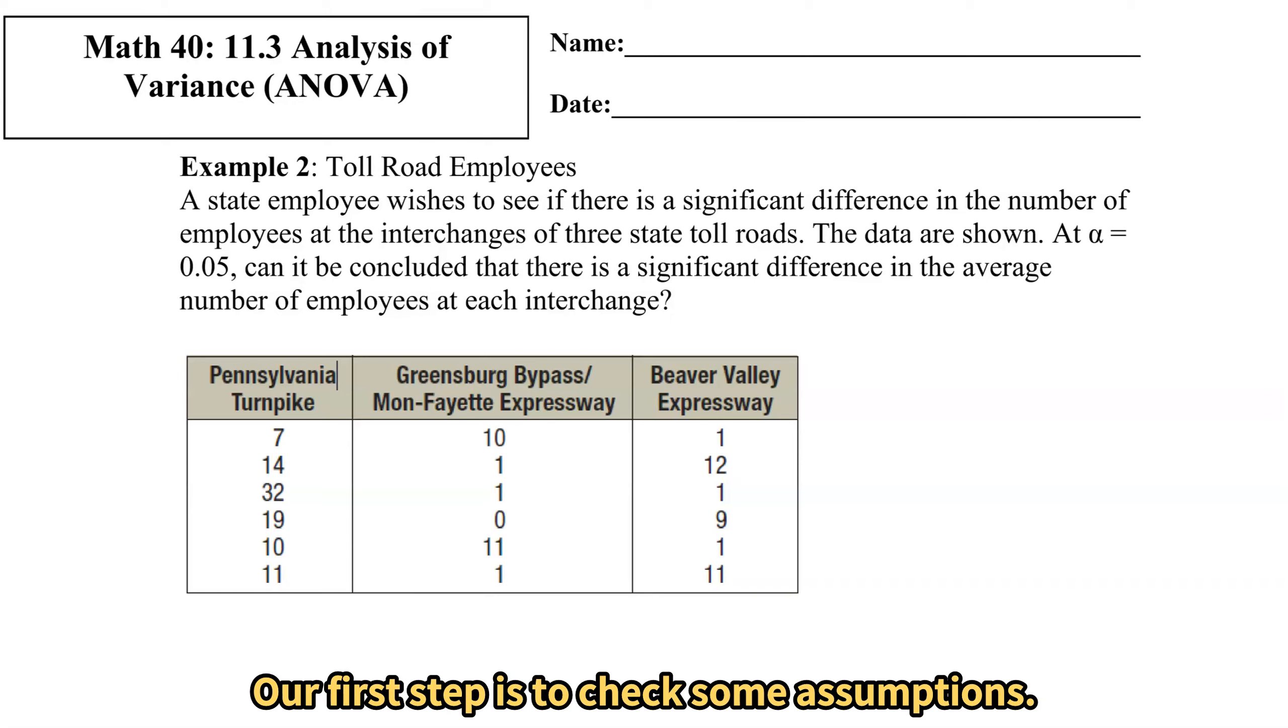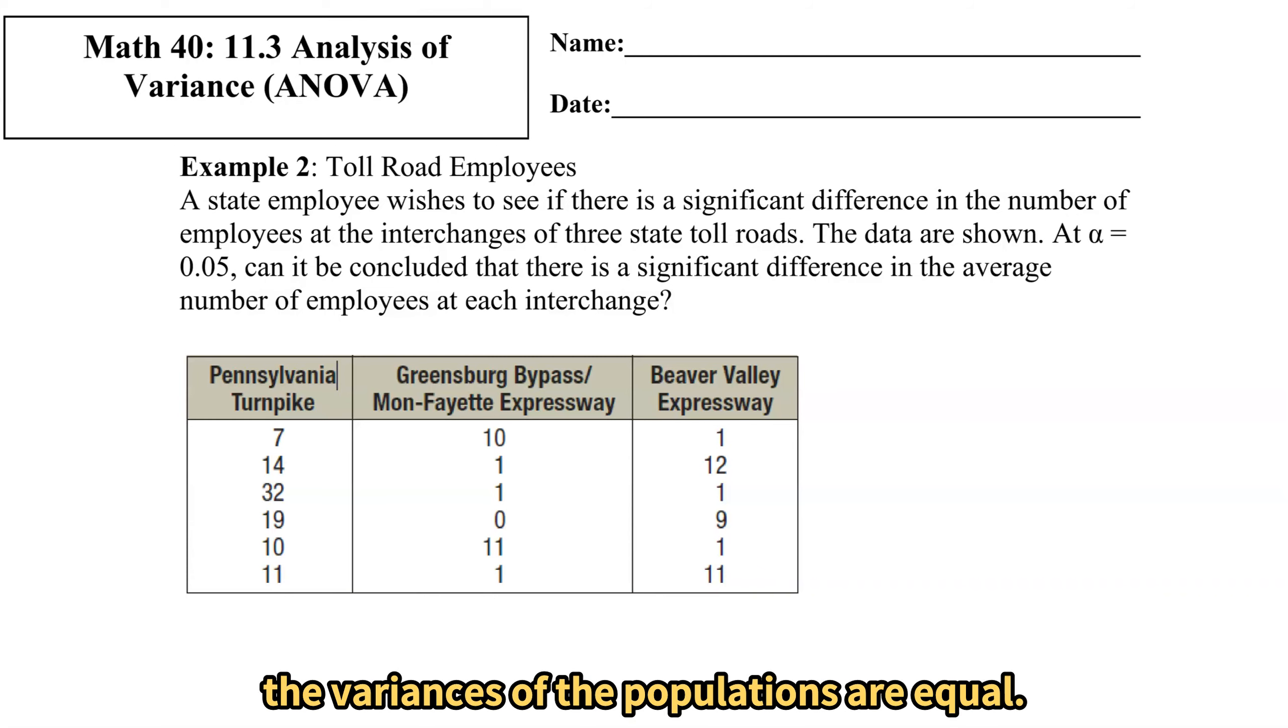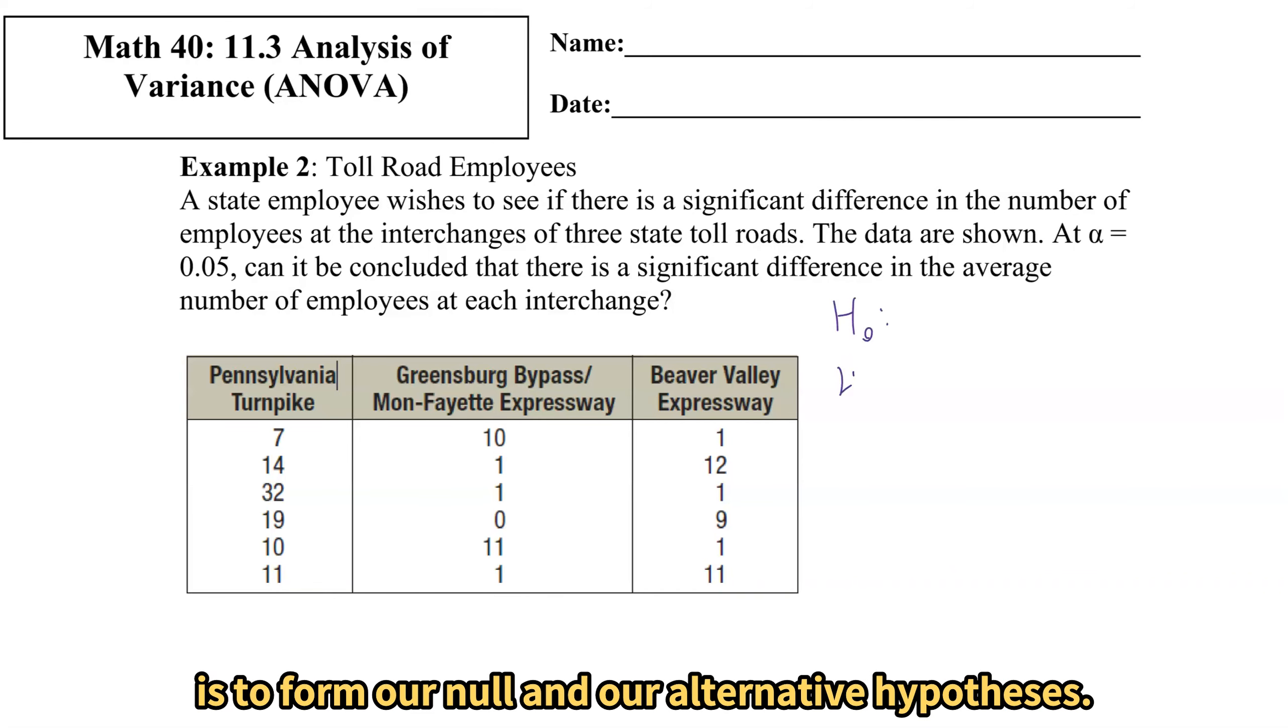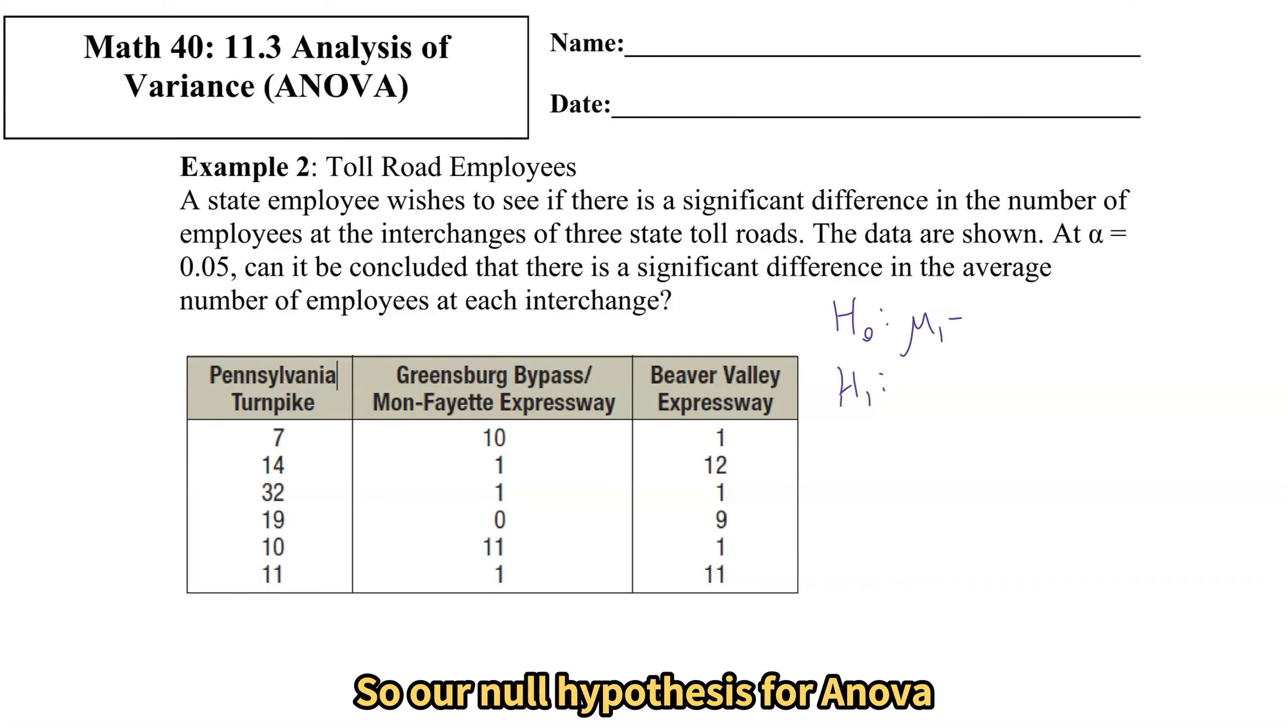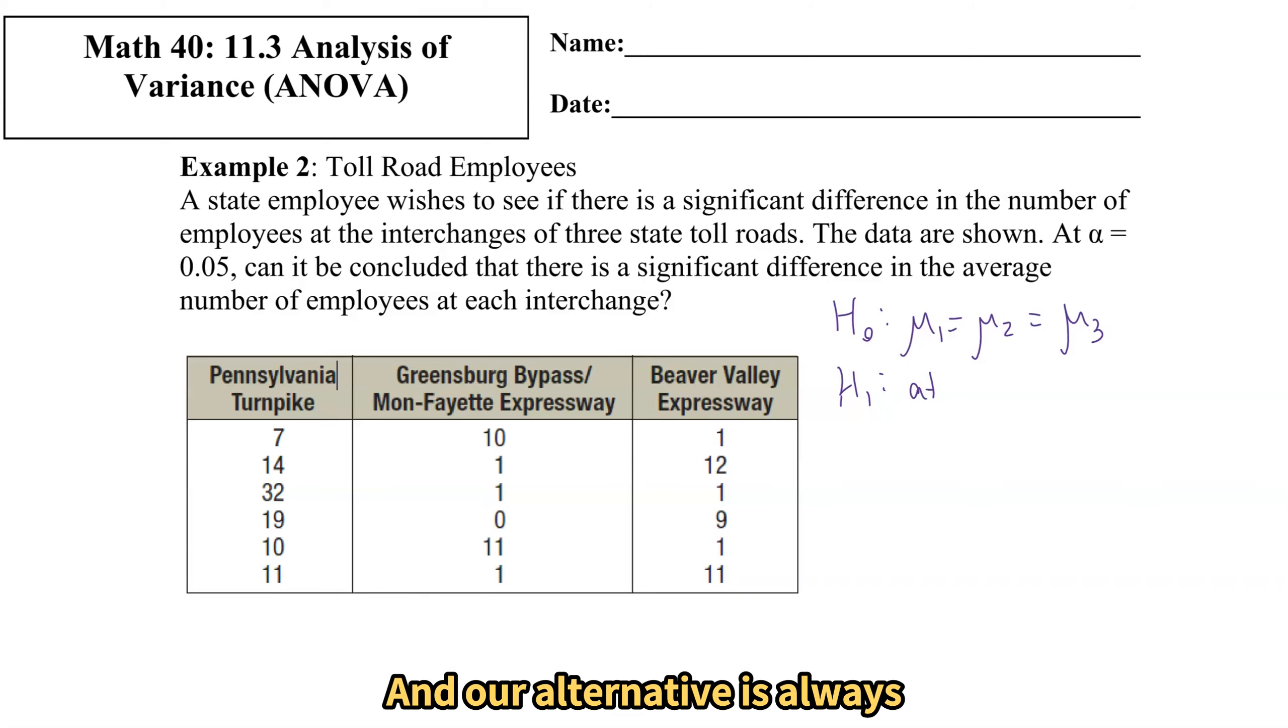Our first step is to check some assumptions. We're going to assume approximately normal distribution and that the samples are independent of each other and we're also assuming that the variances of the populations are equal. With those assumptions the next step is to form our null and alternative hypotheses. So our null hypothesis for ANOVA is always that the means are all equal. We have three groups here so we're going to have three means being equal and our alternative is always at least one mean is different.